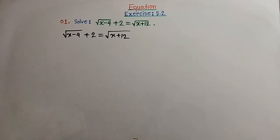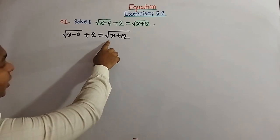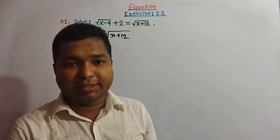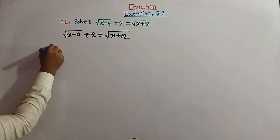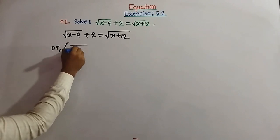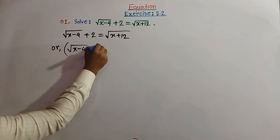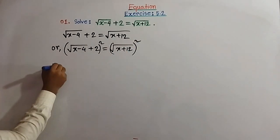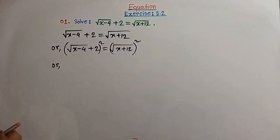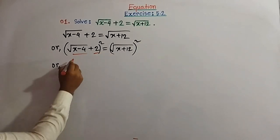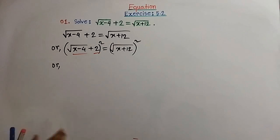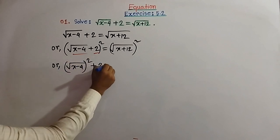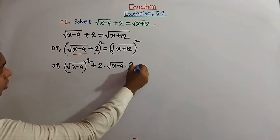For finding the value of x, at first we have to remove the radicals, that is the square root sign. For removing the square root sign, at first we square on both sides. By squaring on both sides we get: square root of (x minus 4) plus 2, whole square, equal to square root of (x plus 12), whole square. Here we compare square root of (x minus 4) as 'a' and 2 as 'b', then using the formula a plus b whole square equal to a square plus 2ab plus b square.